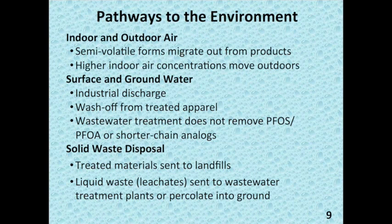On slide nine, we now recognize that many treated consumer articles are in the marketplace. We also know from data collected around the world that some of the highest concentrations of fluorochemicals are actually associated with our indoor environment. For example, fluorochemicals are detected in the air or gas phase of homes and offices because these volatile forms migrate from consumer products over the lifetime of those products. When we open doors to our homes and offices, we vent our buildings to the outside, and higher indoor air concentrations set up a gradient where fluorochemicals flow from indoors to outdoors.